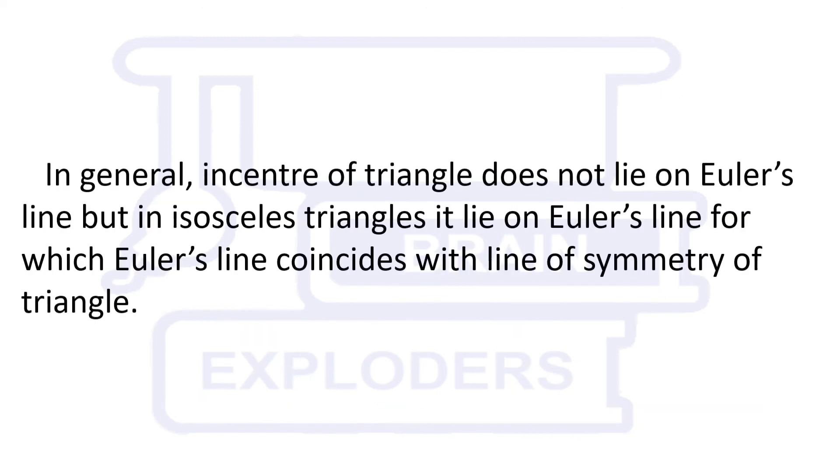In general, incenter of triangle does not lie on Euler's line but in isosceles triangle it lies on Euler's line for which Euler's line coincides with the line of symmetry of triangle.